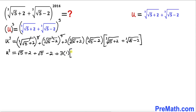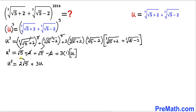I'm going to replace that bracket by simply u. The +2 and −2 cancel each other out, so we end up with u³ = 2√5 + 3u. Moving 2√5 to the left hand side gives us u³ − 2√5 = 3u.